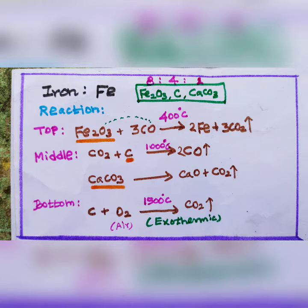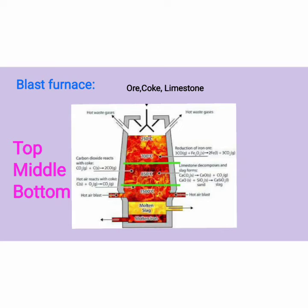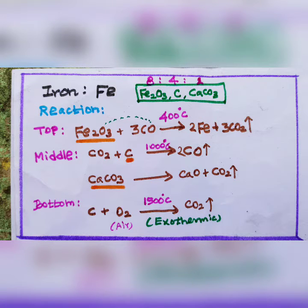Here reaction takes place in three stages. Top side, Fe2O3 react with carbon monoxide under 400 degrees Celsius, then Fe2O3 is reduced as Fe and carbon dioxide is removed.